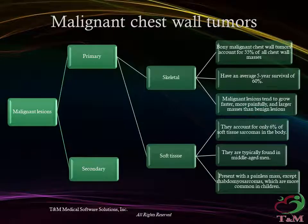Malignant chest wall tumors can either be primary or secondary. The primary tumor can arise from skeletal tissue or soft tissue. Skeletal primary malignant lesions of the chest wall account for 55% of all chest wall masses and have an average 5-year survival of 60%. Malignant lesions tend to grow faster, are more painful, and larger than benign lesions. Soft tissue primary malignant lesions account for 6% of soft tissue sarcomas in the body. They are typically found in middle-aged men presenting with painless masses, except rhabdomyosarcoma, which is more common in children.